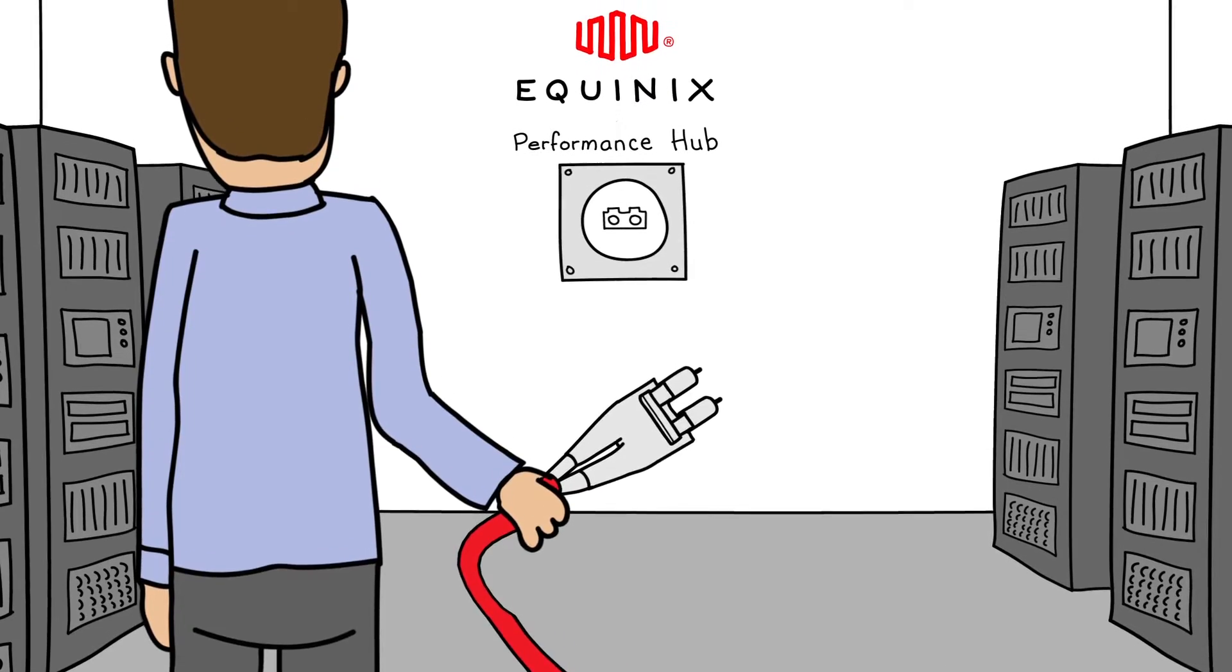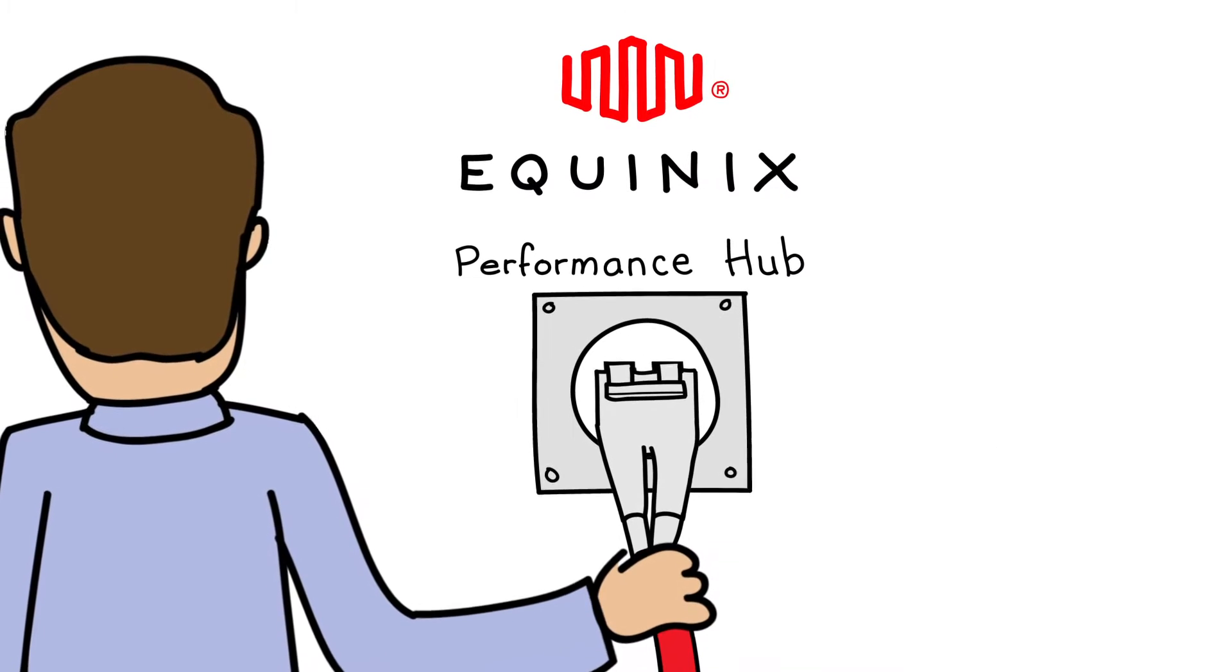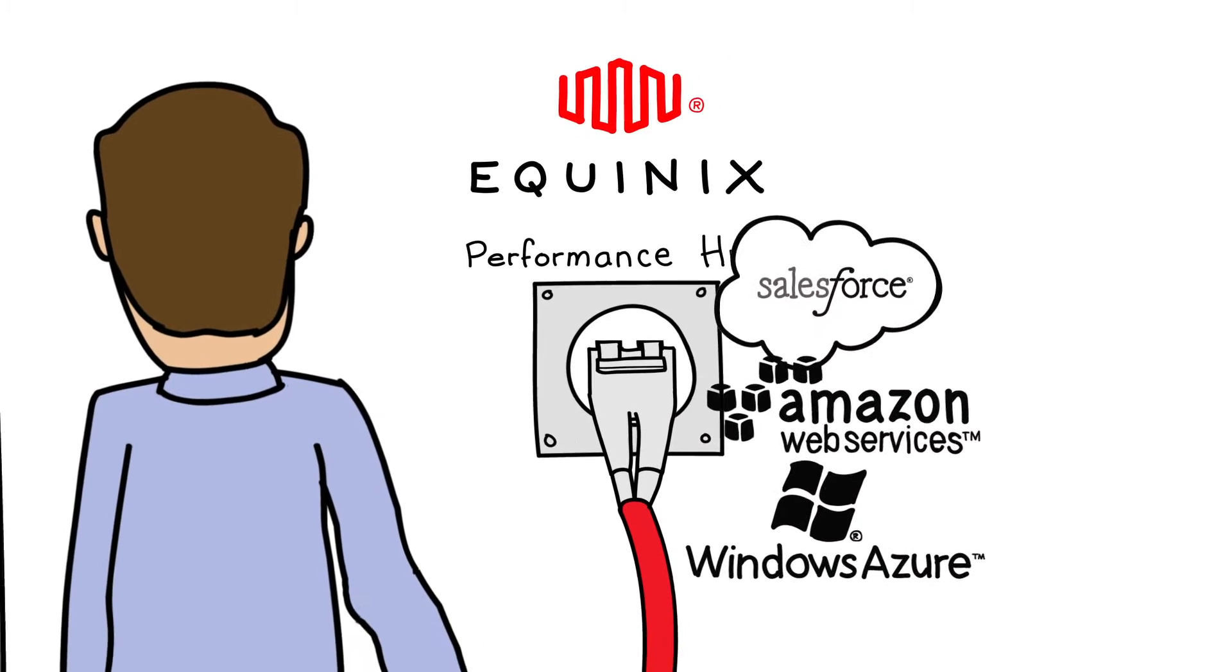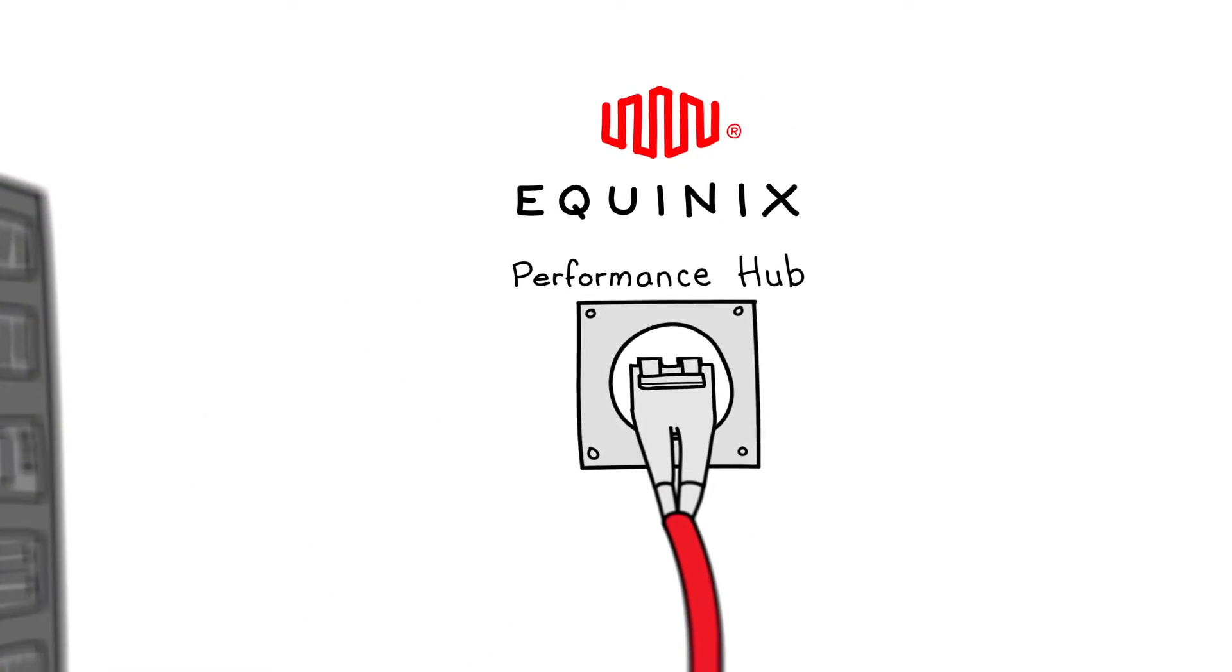By implementing an Equinix Performance Hub, Brad now has direct, secure connectivity to a public cloud. He can also solve many other IT challenges. And he can easily deploy his own private or hybrid cloud as part of the Performance Hub.